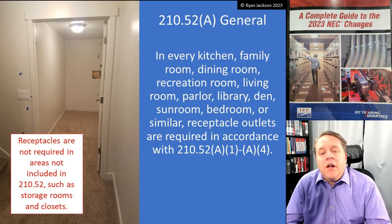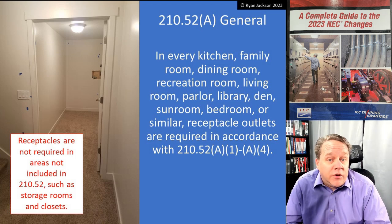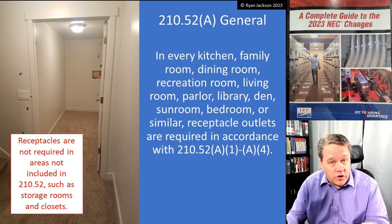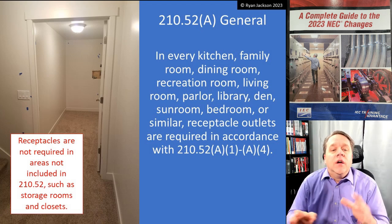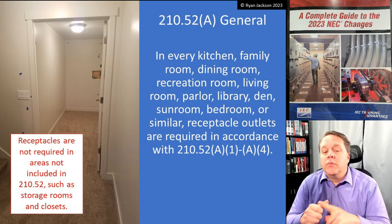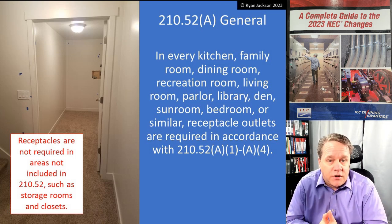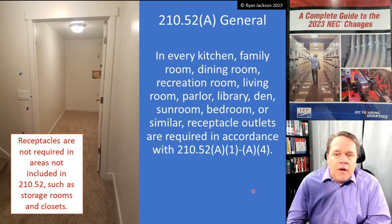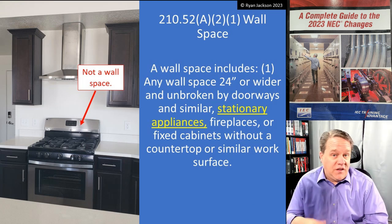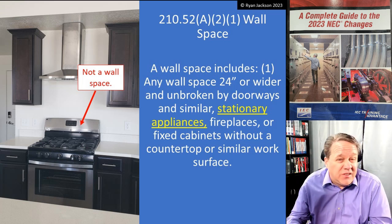210.52A — General: in every kitchen, family room, dining room, recreation room, living room, parlor, library, den, sunroom, bedroom, and similar rooms, receptacle outlets are required in accordance with A1 through A4. This is where we get our wall space requirements — the 6-foot and 12-foot layout. Only those listed rooms require receptacle outlets; rooms like closets, storage rooms, and mud rooms do not.